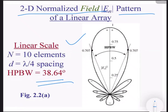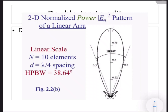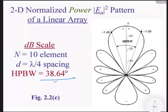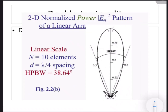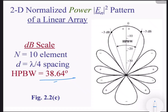In a normalized field pattern, when there are more elements in the field, they are considered as an array, and we average the beam width value for all the antennas to get the final summation. This is the 2D normalized field pattern and the 2D normalized power pattern of a linear array. We can obtain the power pattern and field pattern on different scales — linear scale and dB scale.